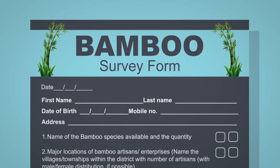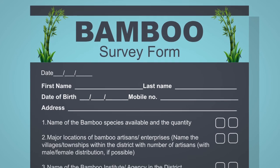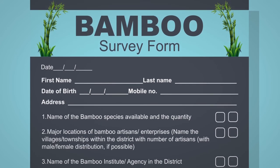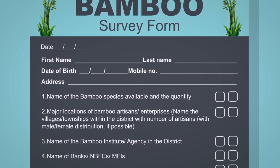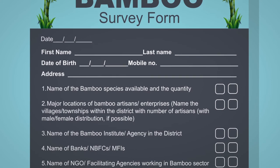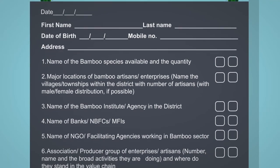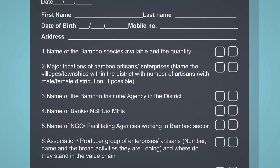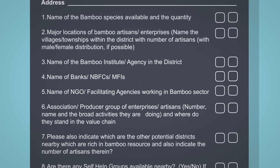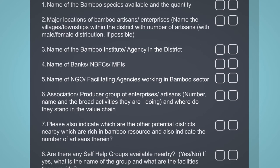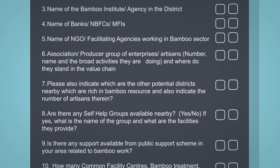For the market, we follow the MTNMO approach for our area. We look at the homeland community level as well. The artisan enterprise is identified by species type. There are artisan enterprises in Kuming district, including male and female artisans. We record the association, producer, enterprise details, artisan numbers, names, and activities. Public support schemes such as common facility centers, bamboo treatment, and designing centers are available.